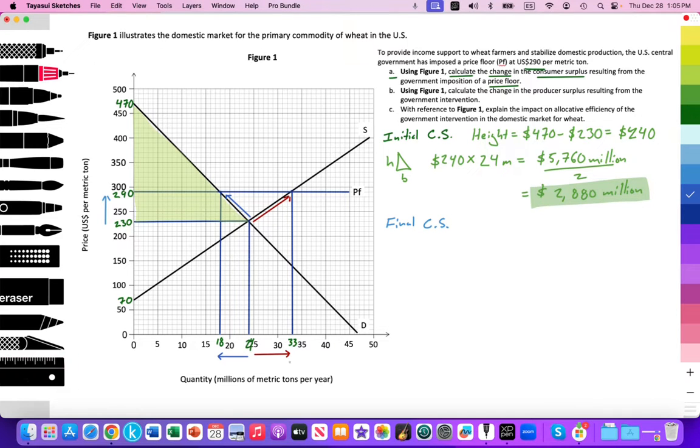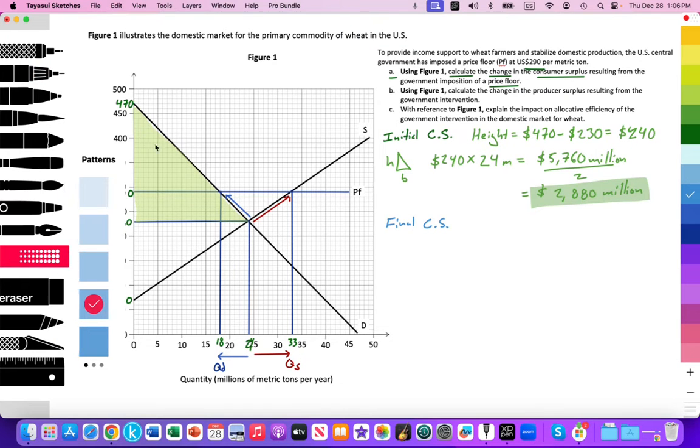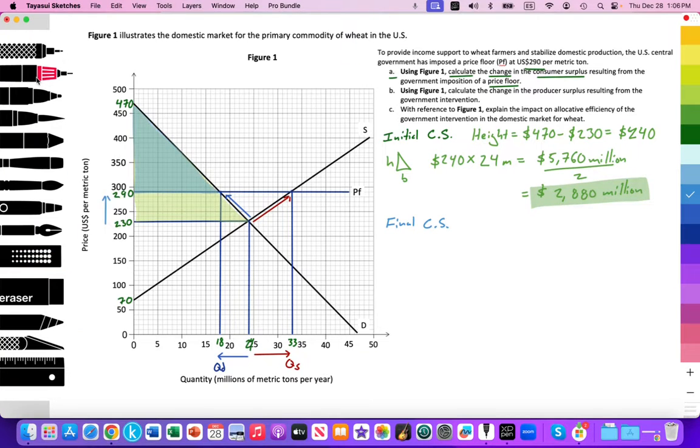But on the consumption side, you're going to have consumers being demotivated to consume. And that's going to lead to a reduction in the quantity of demand from 24 to 18. Again, a movement along the demand curve from here to here. So I can also mark that 33 million metric tons is the quantity of supply, and 18 million metric tons is the quantity of demand. And here we have that excess supply in between. So the price has gone up from 230 to 290. And so I'm going to get a reduced surface area for the consumers.